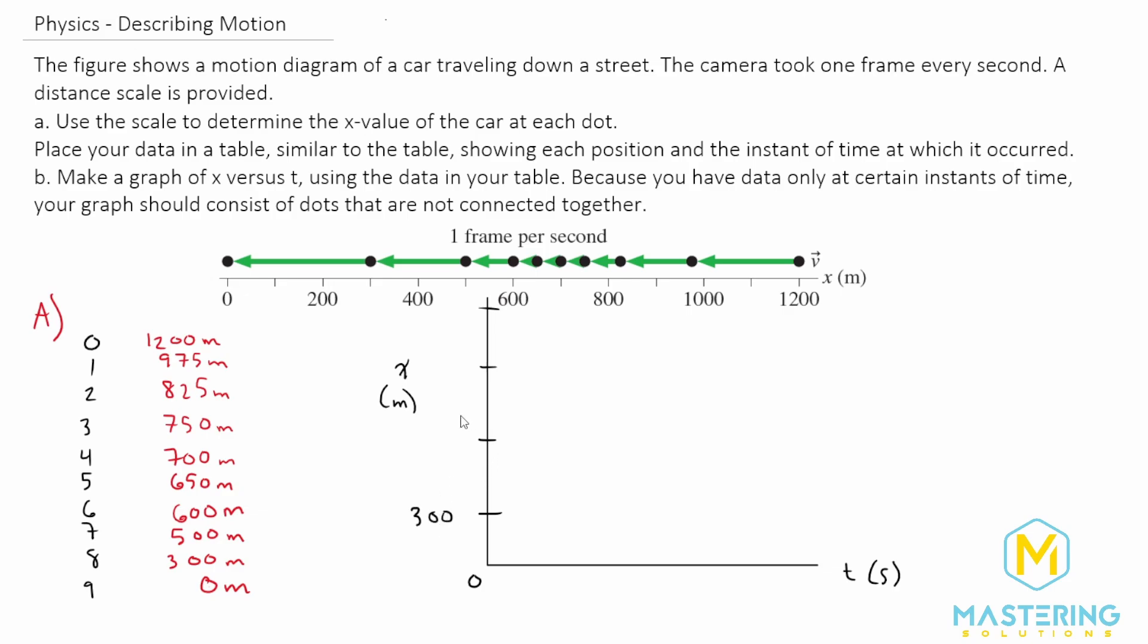So 300 meters, 600, 900, and 1200. And then we go from two to 10 every two seconds would be the easiest. So here's two, four, six, eight, and 10.